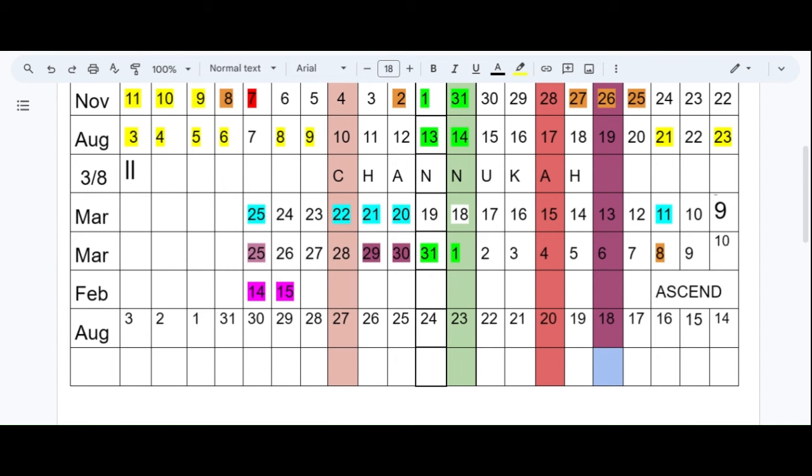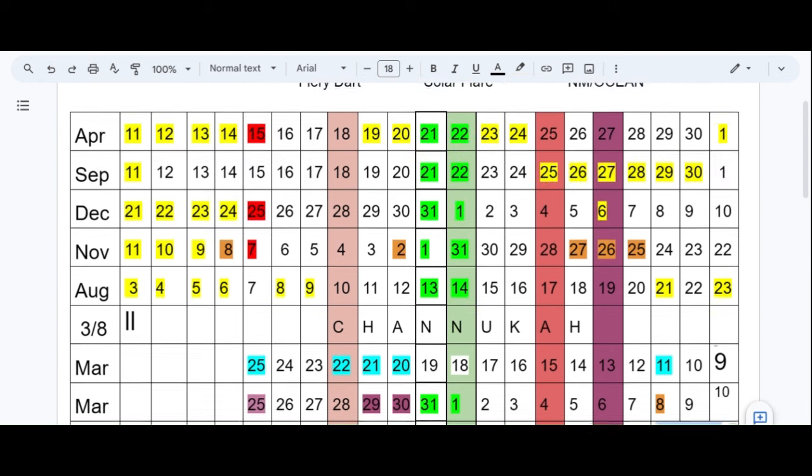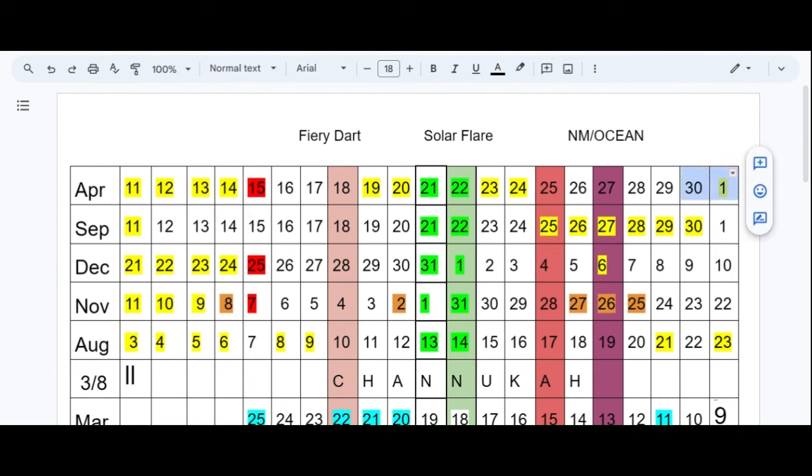We also have that this is ascend because this is the end of our calendar and it would match up with Jesus when he ascended to heaven 40 days after the cross. So that's also related to this time period right here.